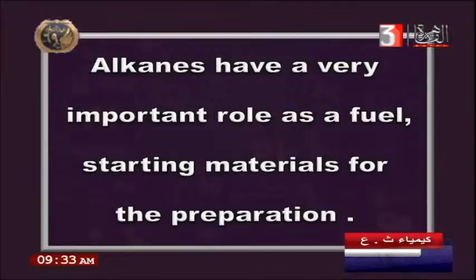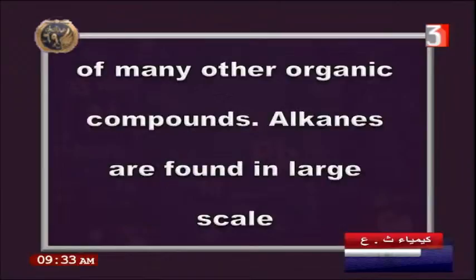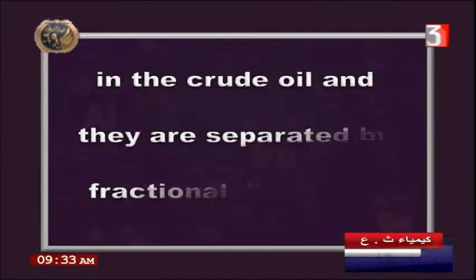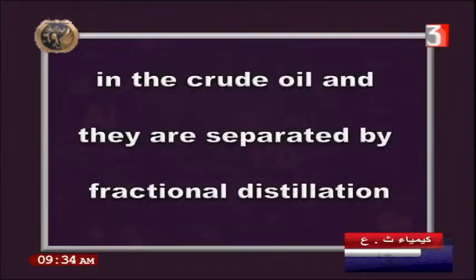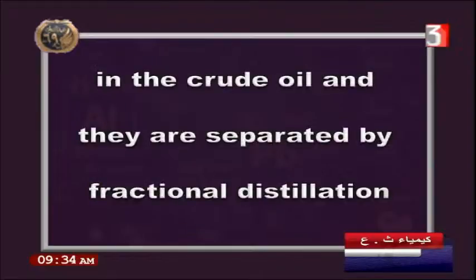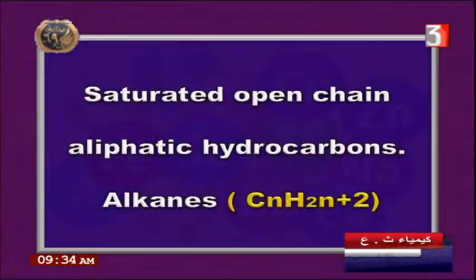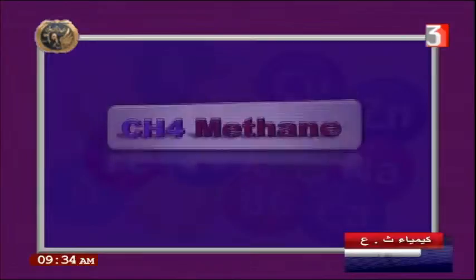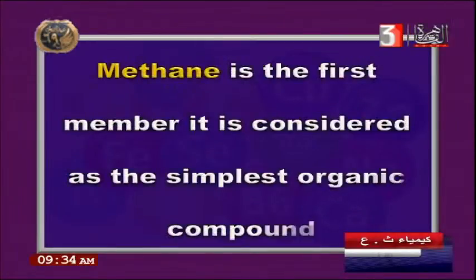Alkanes are used as starting materials for preparing many other organic compounds. They are found in large amounts in crude oil and are separated by fractional distillation. This involves breaking the saturated open-chain aliphatic hydrocarbons — methane with formula CnH2n+2.